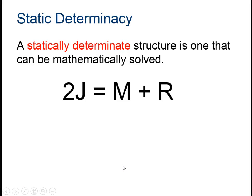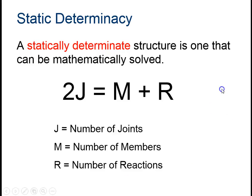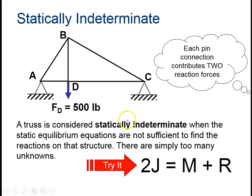Our first calculation we're going to do is to determine static determinacy. You should copy down this formula. J stands for the number of joints, M stands for the number of members, and R is the number of reactions. So here, if we have this truss, we're going to determine if it's statically determinate by plugging these in and then seeing if it works.